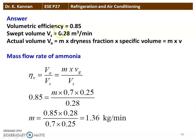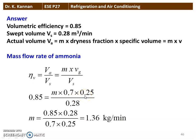The volumetric efficiency of the compressor is 0.85. Swept volume is 0.28 meter cube per minute. Volumetric efficiency equals actual volume divided by swept volume. The actual volume is mass into dryness fraction into specific volume of the ammonia refrigerant — it is wet refrigerant, so X into Vg divided by Vs. Substituting: 0.85 equals mass into X equal to 0.7, into 0.25, divided by 0.28. Rearranging and calculating, M equals 0.85 into 0.28 divided by 0.7 into 0.25, equal to 1.36 kilograms per minute. That is the answer.